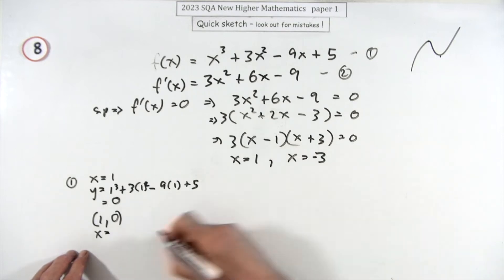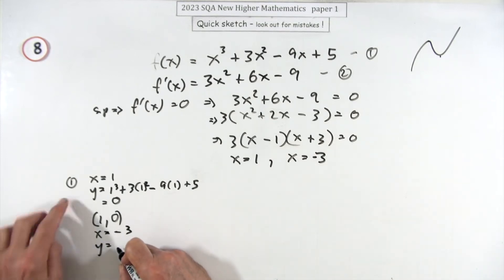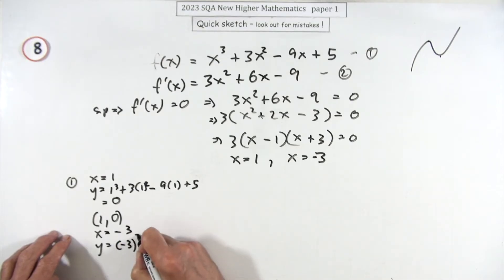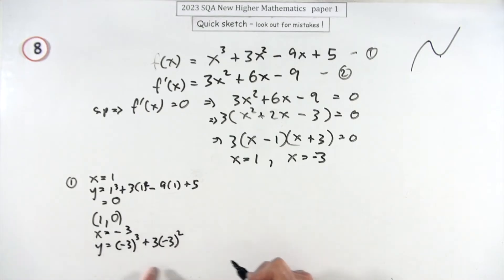So something happens at (1, 0). What about x equals negative three? That's a bit more working out. You're going to have negative three cubed plus three times negative three squared minus nine times negative three plus five. Because they're identical, they'll just cancel out - that's a negative three cubed but that's a positive three cubed, so they go.